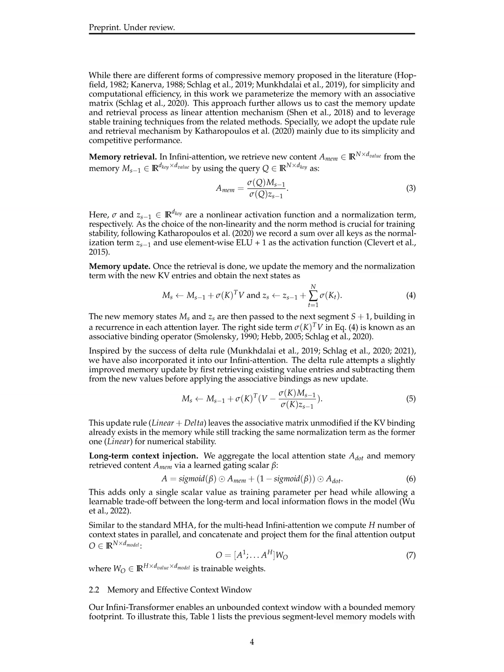The retrieval process retrieves new content A-MEM from the memory M-S1 using the query Q and a normalization term Z-S1. The retrieval is done by applying a non-linear activation function and a normalization term to the query and memory states. After retrieval, the memory and normalization term are updated with the new key-value entries to obtain the next memory states.